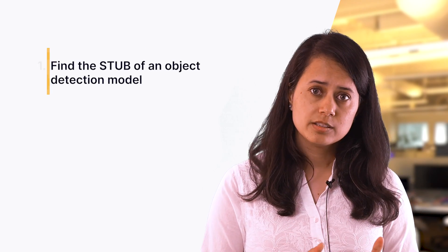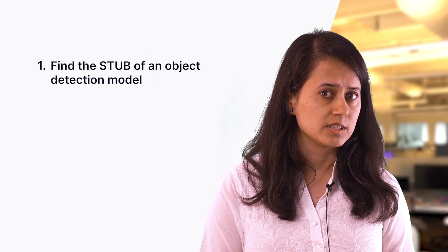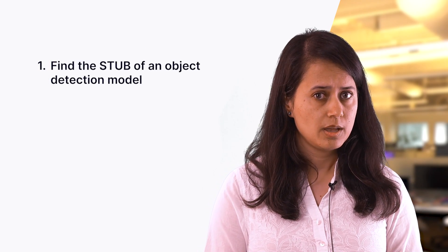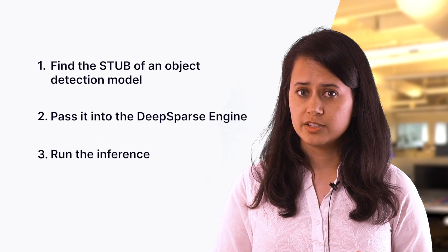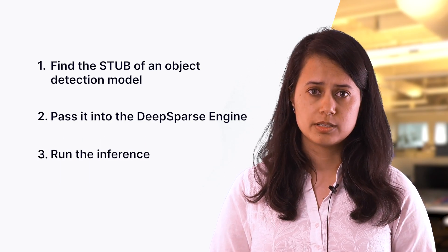So for the simplest pipeline, all you need to do is find the stub of an object detection model in Sparse Zoo, pass it into the Deep Sparse Engine, and run the inference. The engine will automatically download and compile the model for easy testing and deployment. Now that we have an overview, let's walk through some Python code on how you can use a model from Sparse Zoo to perform object detection.